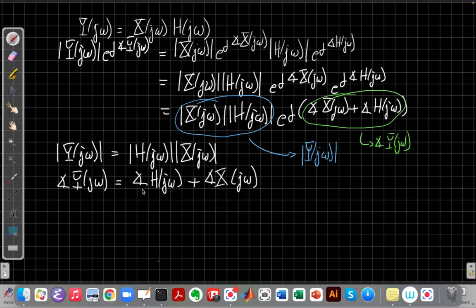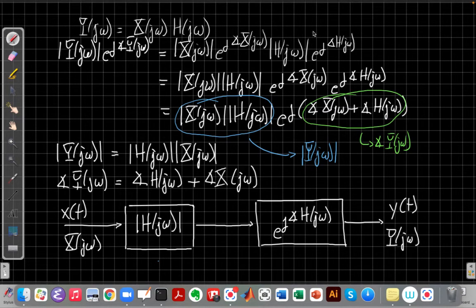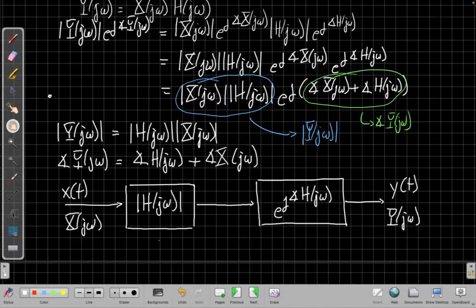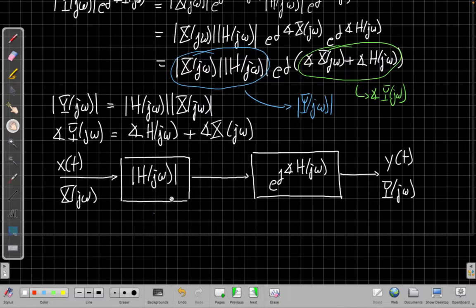One way I find it helpful to think about this sometimes is to actually think of this as a cascade. H of j omega is a cascade of two systems. The first one does the magnitude and the second does the phase. So the advantage of this is that I can think about each thing one at a time here as I go through this system. If I'm thinking about the Fourier transform in frequency, the first thing I do is I go through this system with a magnitude of h of j omega.